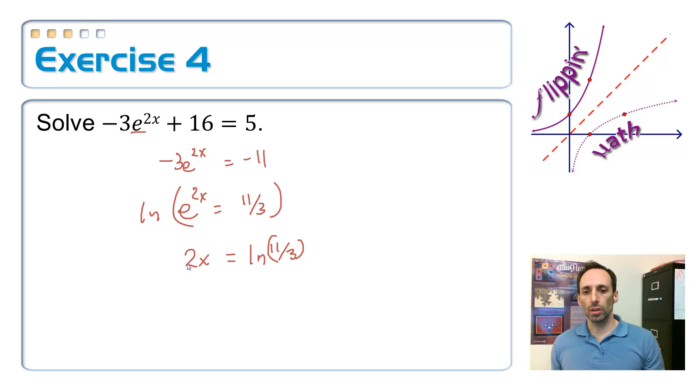And then the final step is just to divide your answer by 2. So, x is equal to the natural log of 11 divided by 3, all over 2. And, if you were looking for an exact answer, that's what it would be.